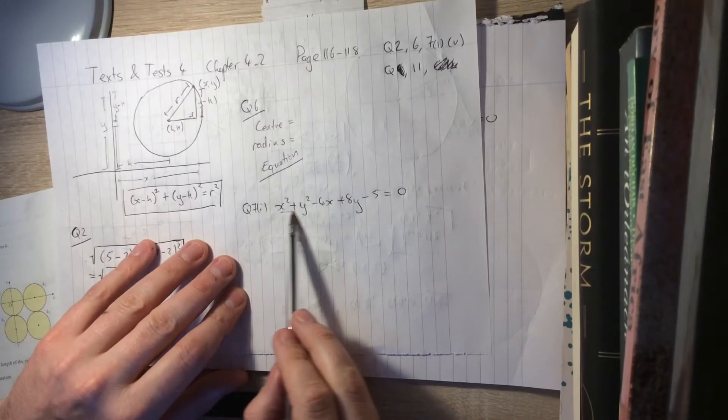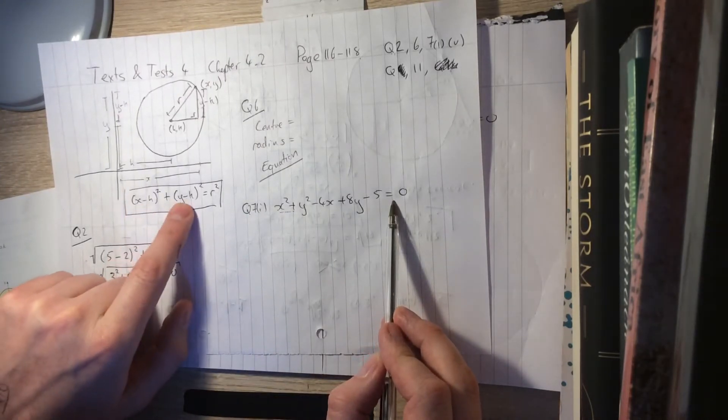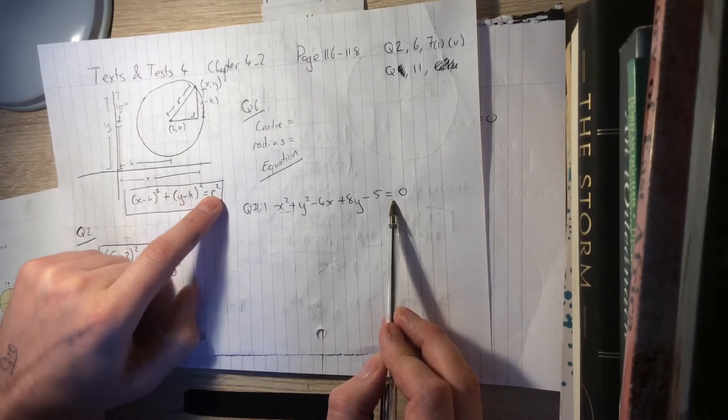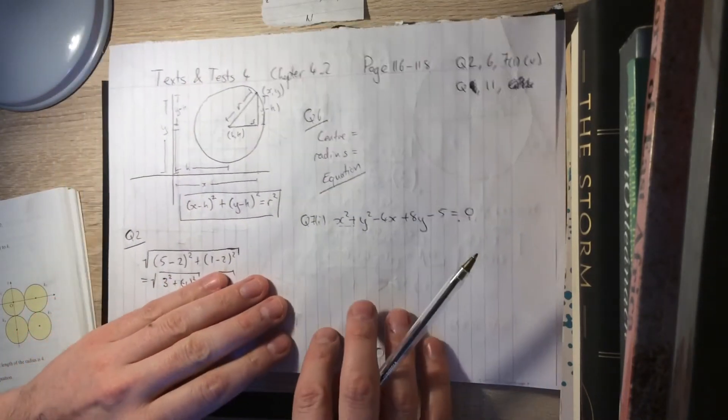Now, later on, we're going to see equations in this form here, which you can find by just multiplying. If you square that and square that and move the radius squared over to the left-hand side, you can get that. We'll address that in a few minutes' time.